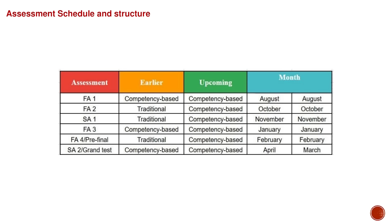Assessment schedule and structure includes FA-1, FA-2, SA-1, FA-3, FA-4, and SA-2 — all competency-based examinations. FA-1 is in the month of August, FA-2 in October, SA-1 in November, FA-3 in January, FA-4 in February, and SA-2 in April.